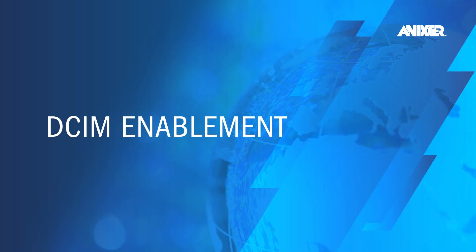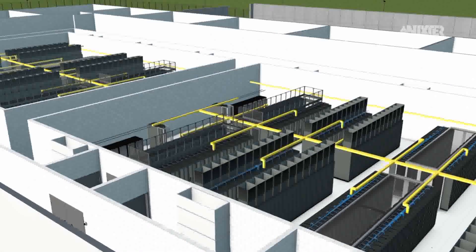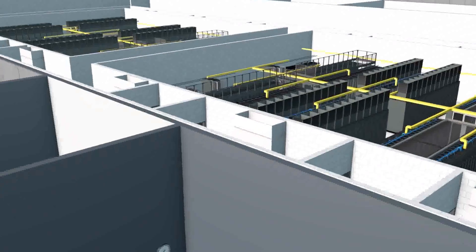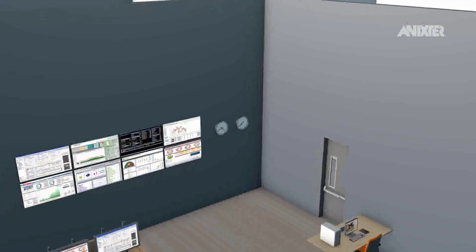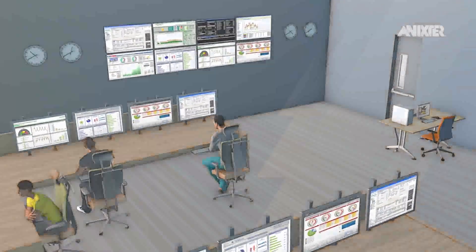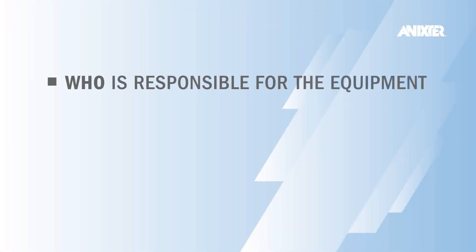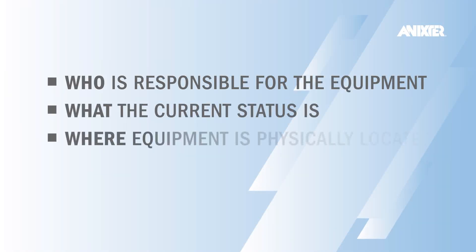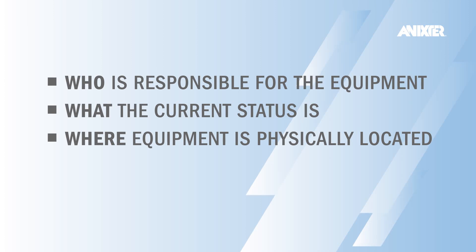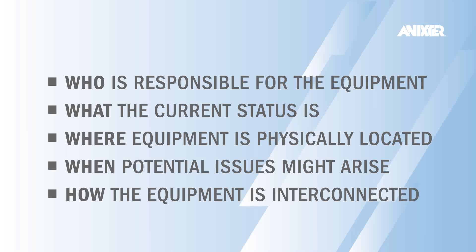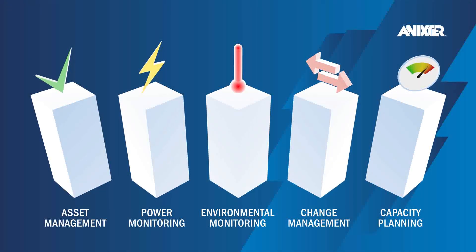The final and possibly most critical key to data centre efficiency is collecting and managing key information around IT and facility assets, utilisation levels and operational status. DSIM helps customers understand who is responsible for the equipment, what the data centre's current operational status is, where equipment is physically located, when potential issues might arise, and how the equipment is interconnected. DSIM can be broken down into five key areas of focus.